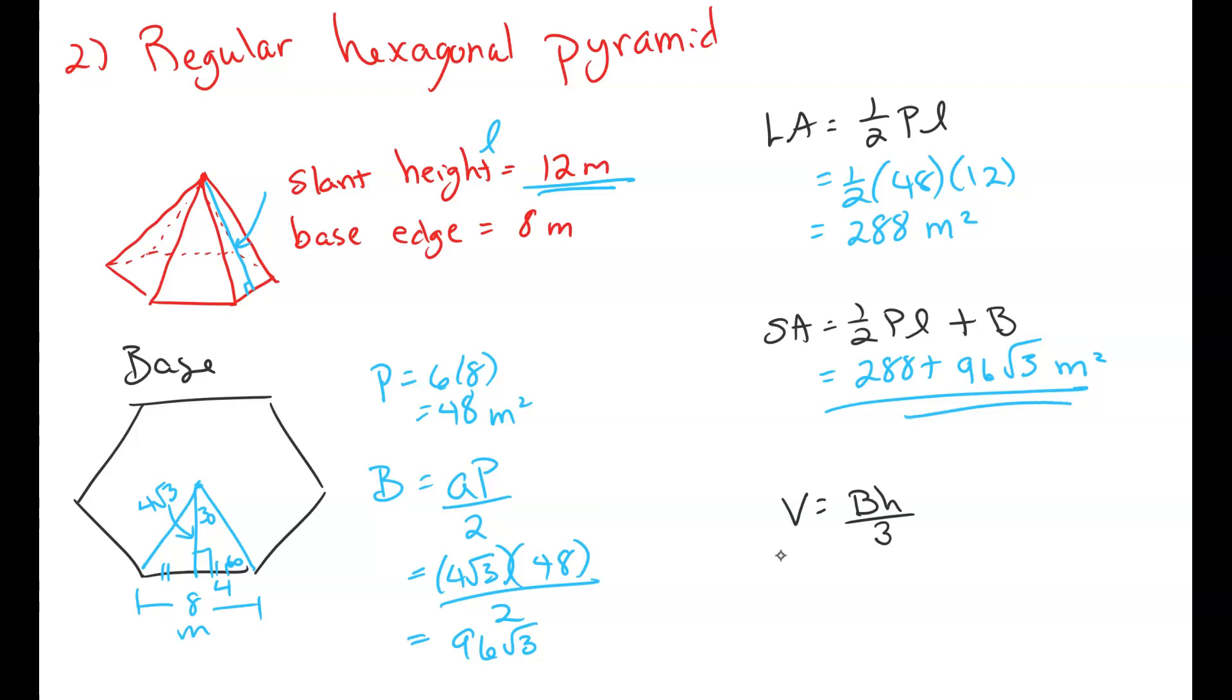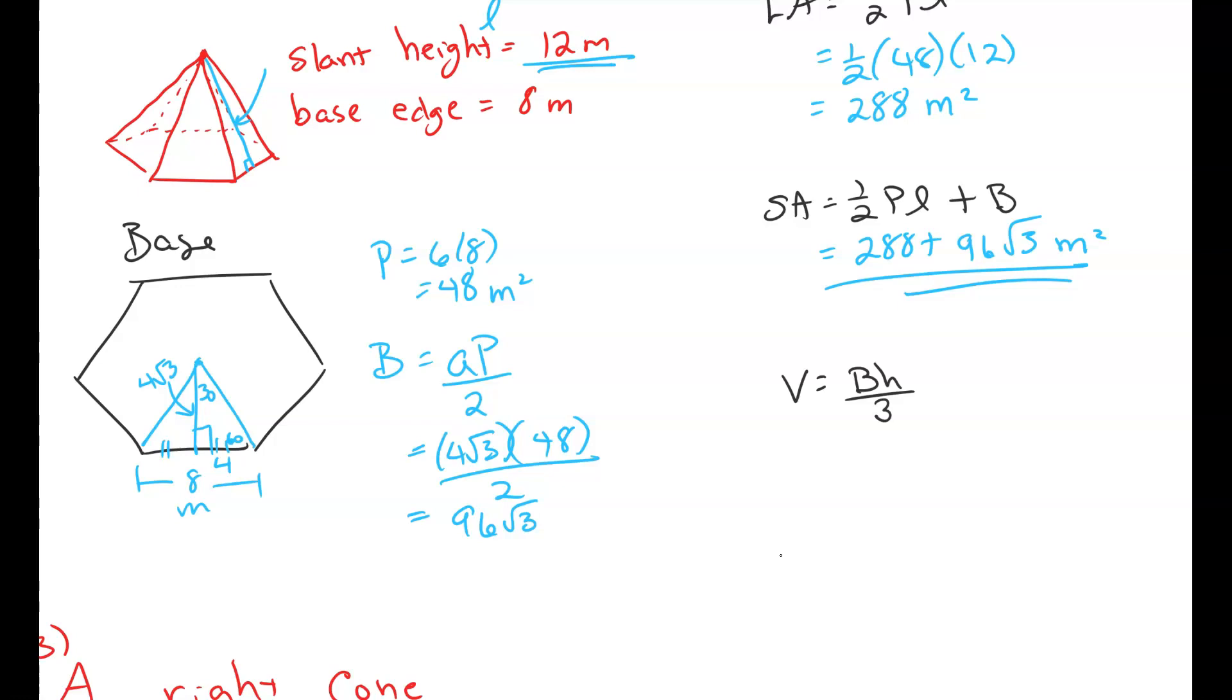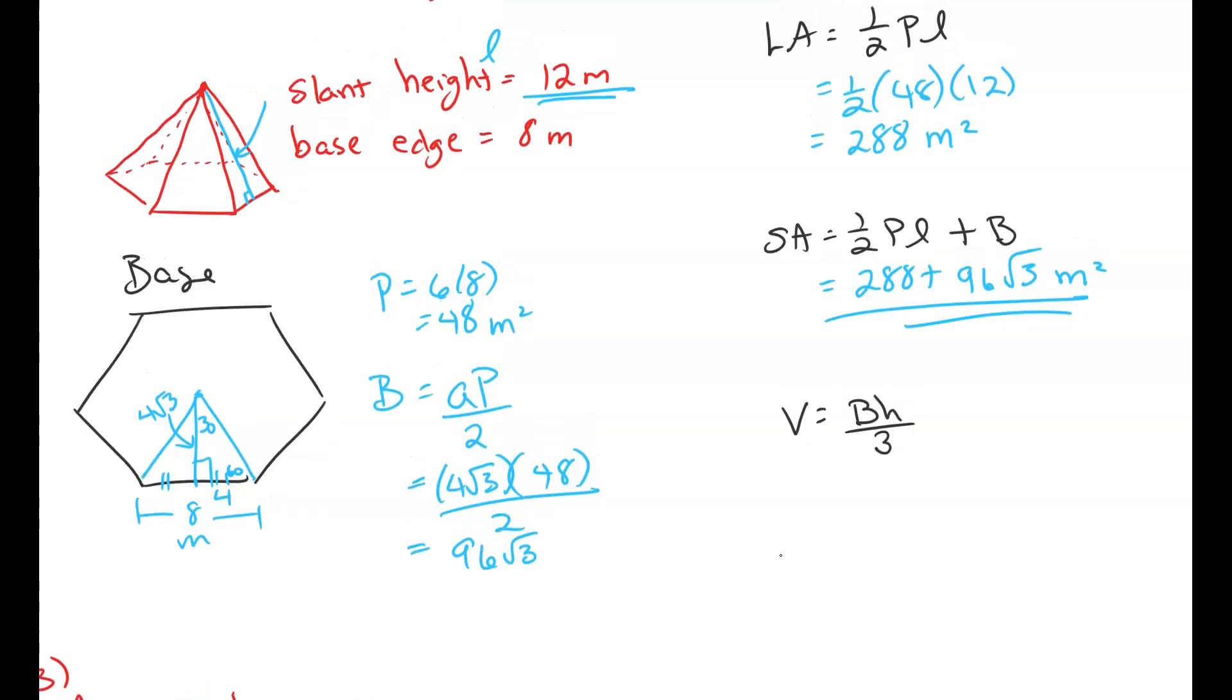Surface area is just our lateral area plus the area of the base. Realize they're not like terms, so you cannot combine them. Now we're going to go on and we have to find volume, but I want you to notice something's missing. We do not know the height of this prism. And really remember the height of the prism goes from the vertex smack dab to the center and it's perpendicular.